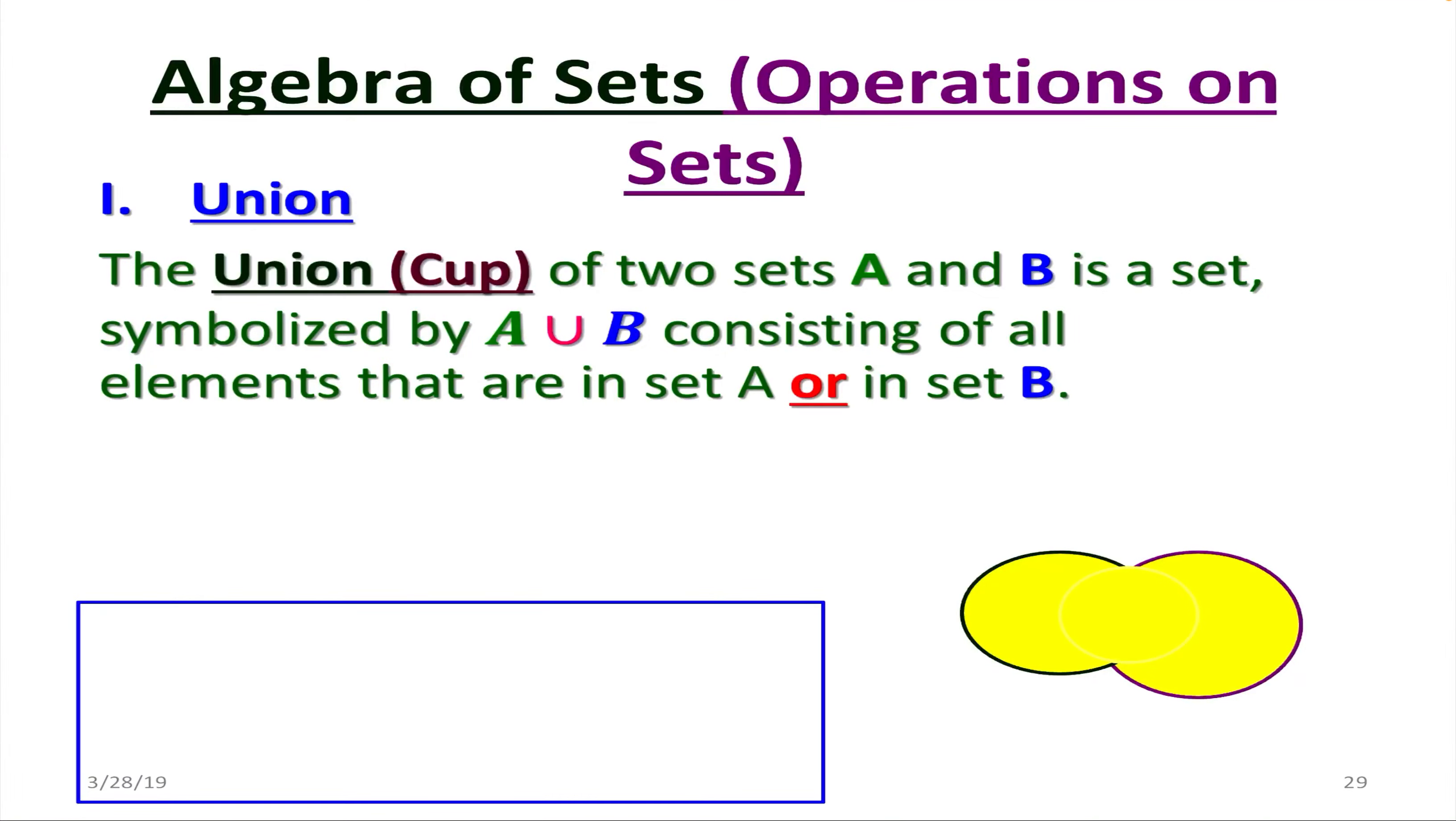Now let's move to algebra of sets or operations on sets. The first one is union. So the union of two sets A and B is a new set symbolized by A, sometimes it's called cup B,